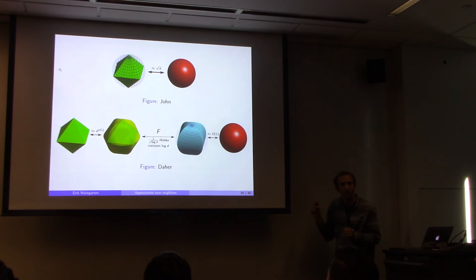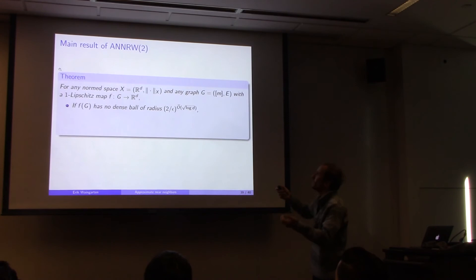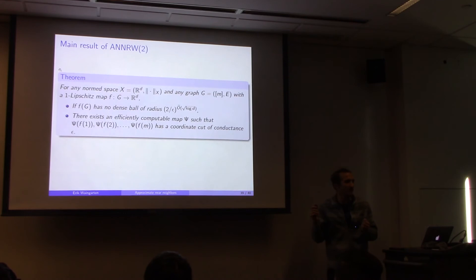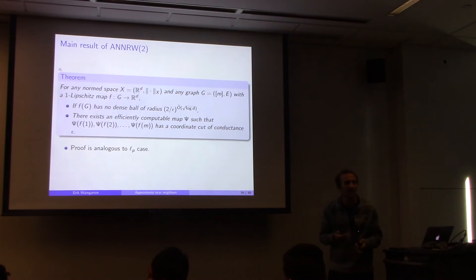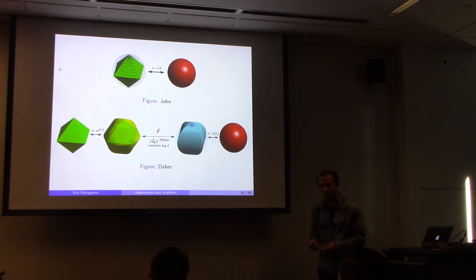The contrast with John's theorem: John just wraps the body inside and out with an ellipsoid. Here we apply a perturbation, then a nonlinear map, then another perturbation. The main statement: for any norm and any graph, if there's no dense ball of radius 2^{sqrt(log d)}, then after applying this map we can find a coordinate cut of conductance at most epsilon. The map is efficiently computable via a convex program.